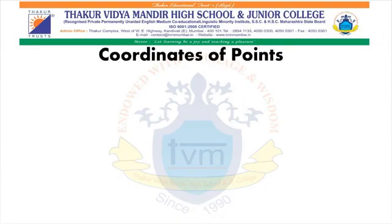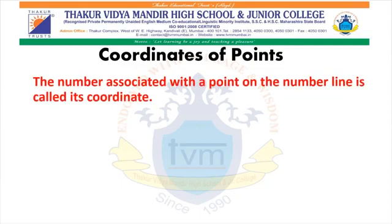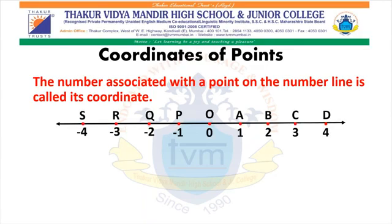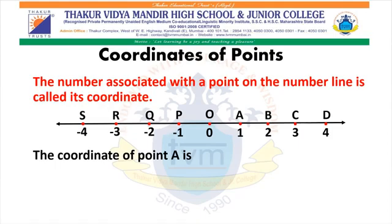Coordinates of points. What do you mean by coordinates of points? The number associated with a point on the number line is called its coordinate. Here we have a line. The coordinate of point A — you can see on the number line, the number associated with point A is 1. So, 1 is called the coordinate of point A. Therefore, the coordinate of point A is 1.